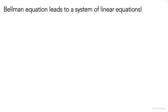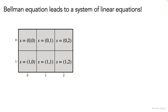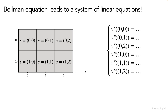Now if we write Bellman equations for our simple environment, it leads to a simple system of six linear equations. So we have six possible states and we can write the Bellman equation for each state, giving us six such equations. And that's really easy to solve, so let's do exactly that.